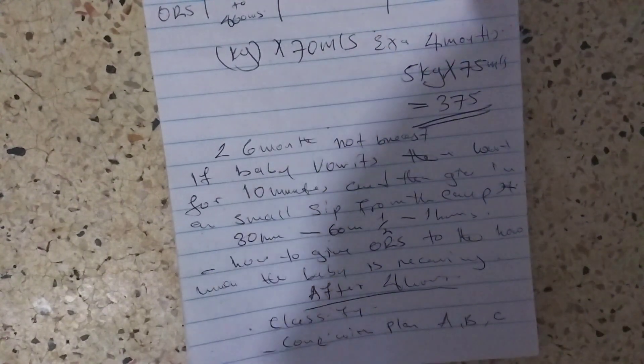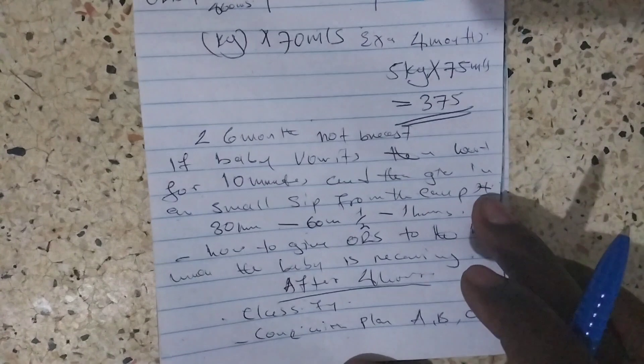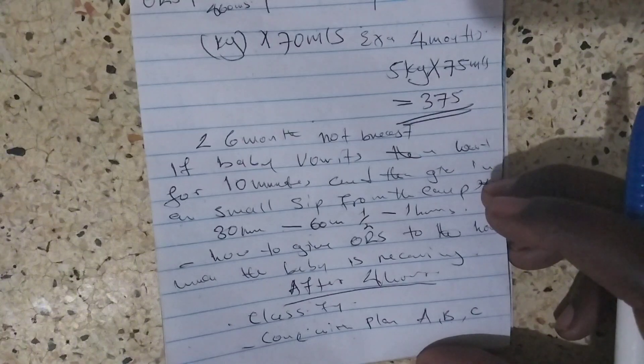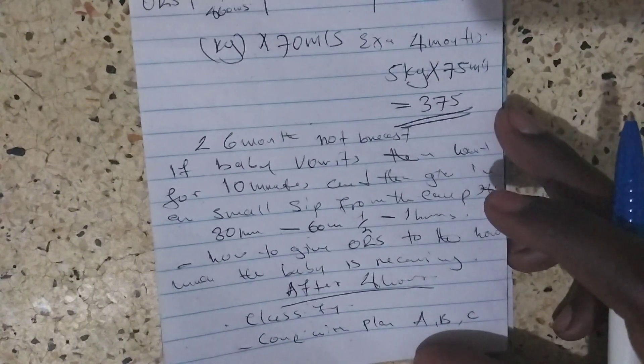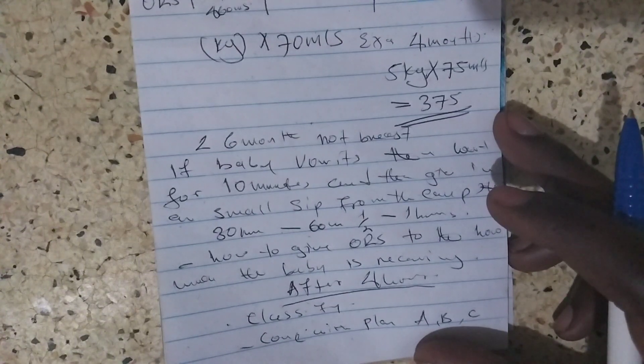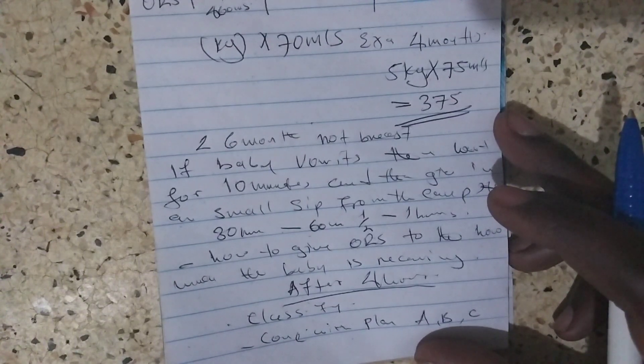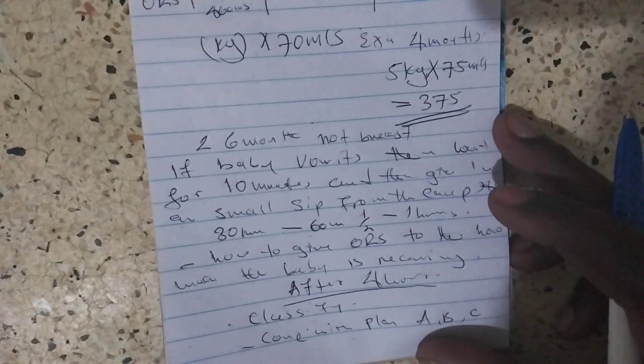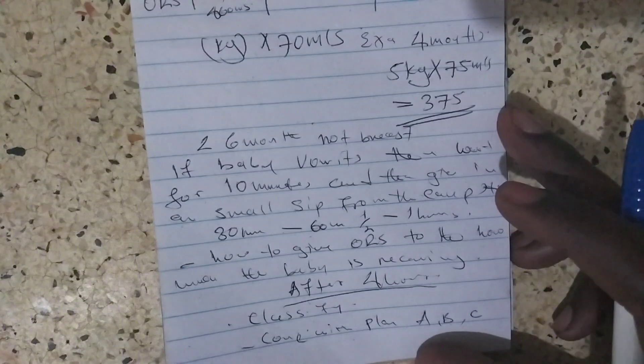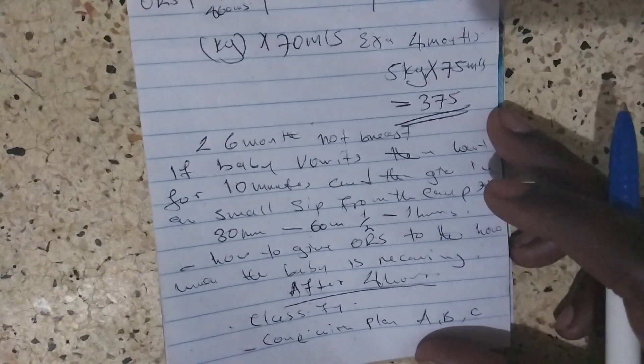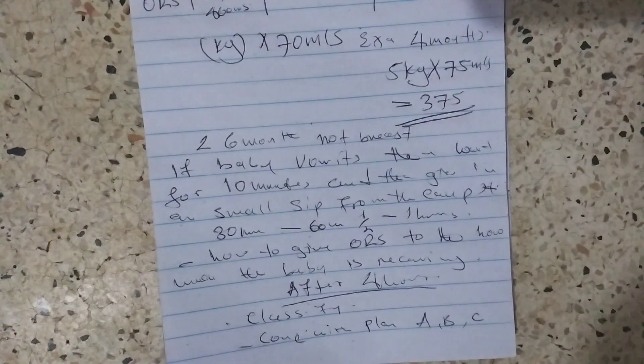When the mother wants to go, by all means you need to give the mother instruction on how to prepare ORS and then give the mother the sachet for home to complete the other one of Plan A. Remember they said ORS should be given to all the children who has been in Plan A, Plan B, and Plan C.